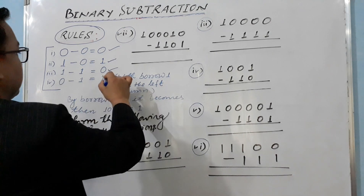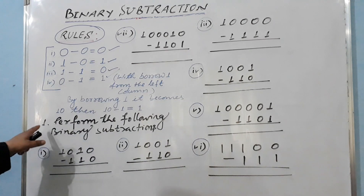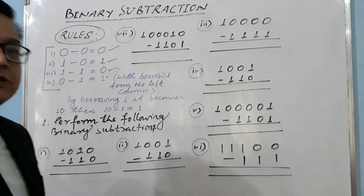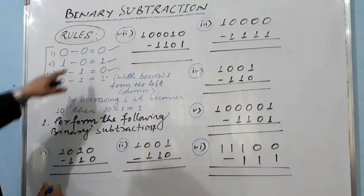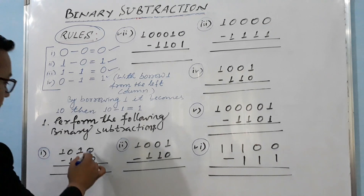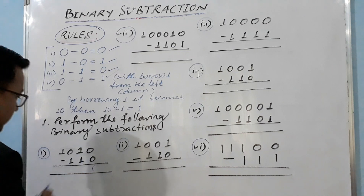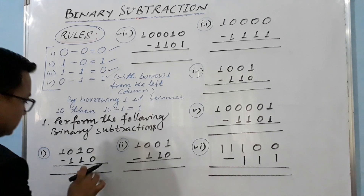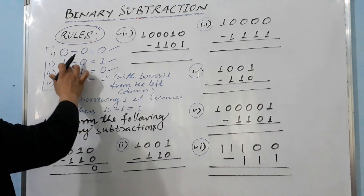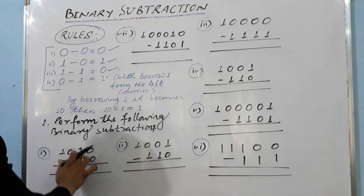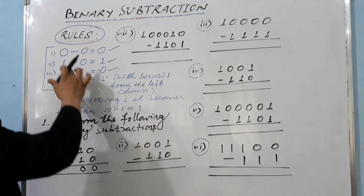Now Question 1 — perform the following binary subtraction. This is very easy, we follow the rules. Zero minus zero equals zero. One minus one equals zero, using the third rule.